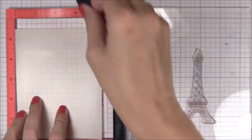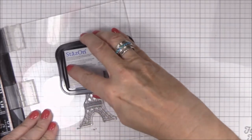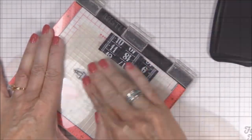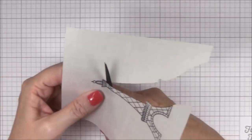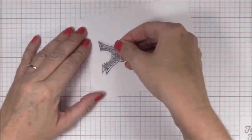I'm stamping the Eiffel Tower image a second time onto some low tack masking material using Stazon Jet Black ink. This is a solvent ink, so it won't smear. I'll cut this out with my detail scissors and remove the release paper and place it on top of the previously stamped image.